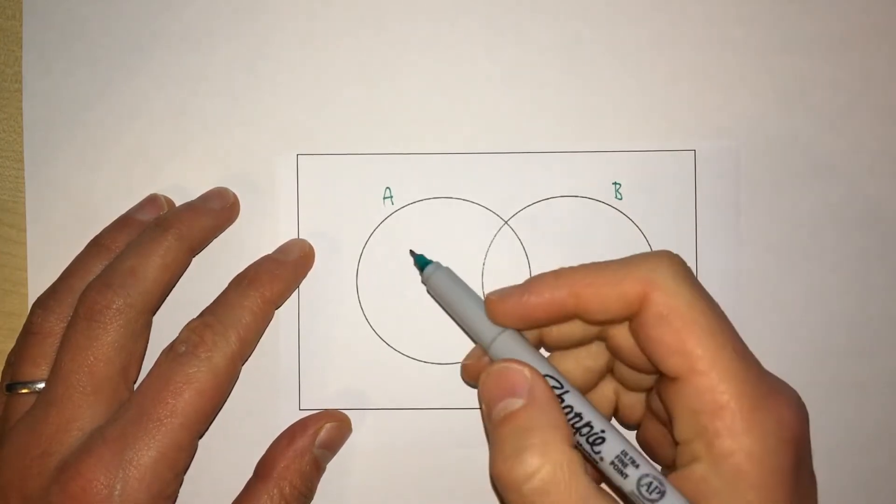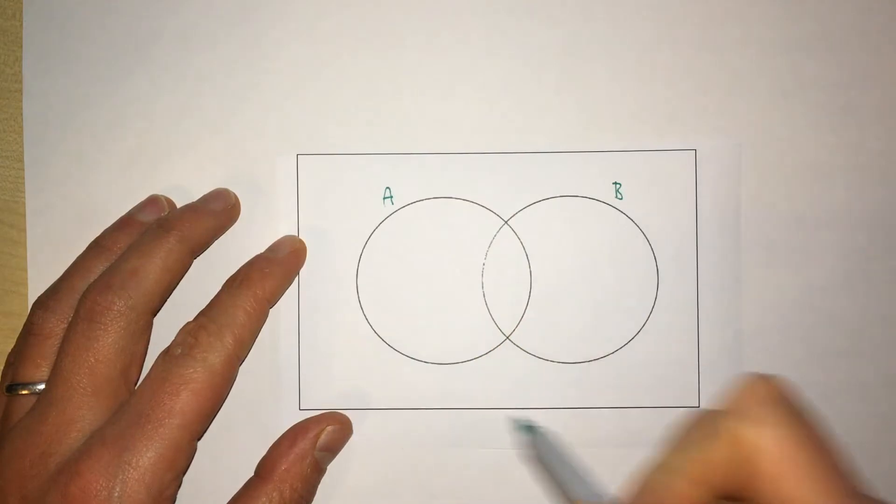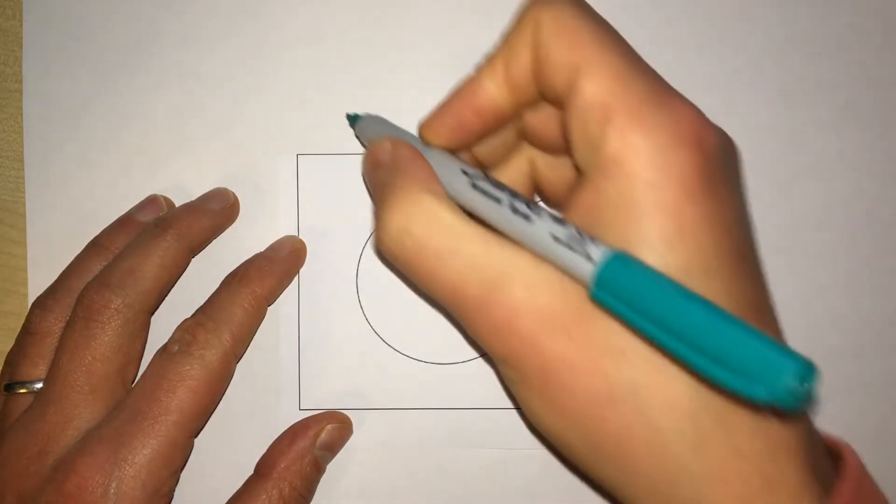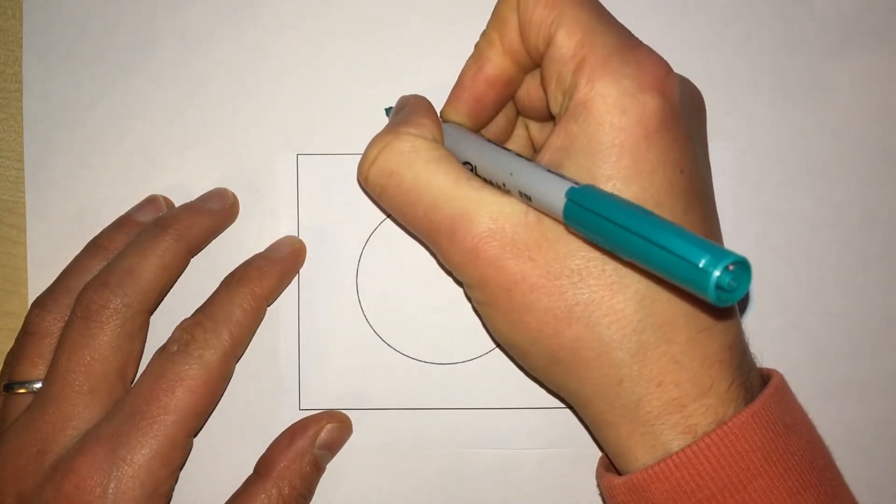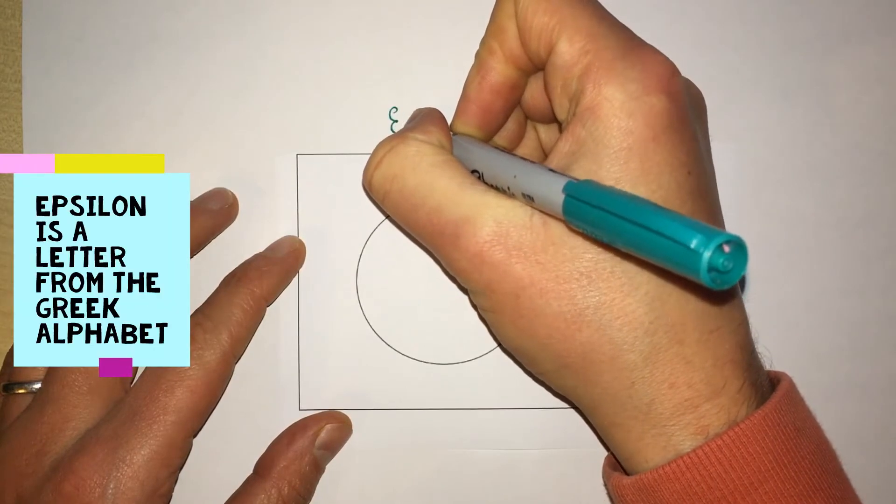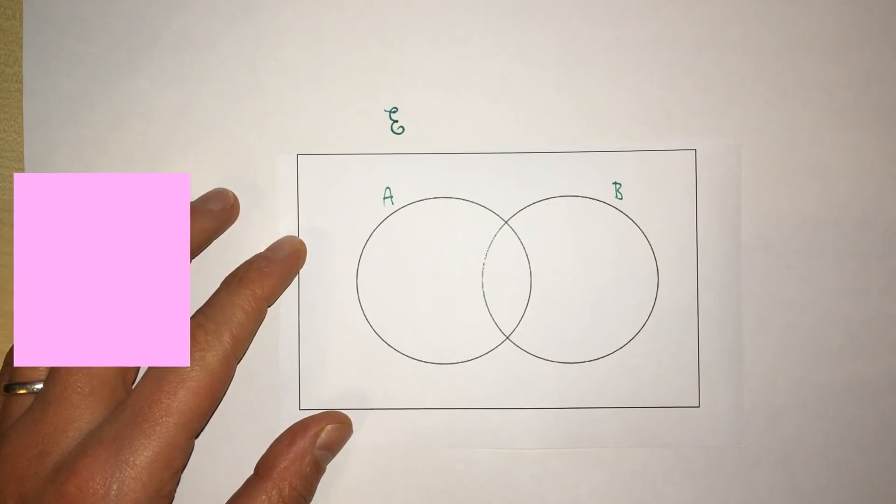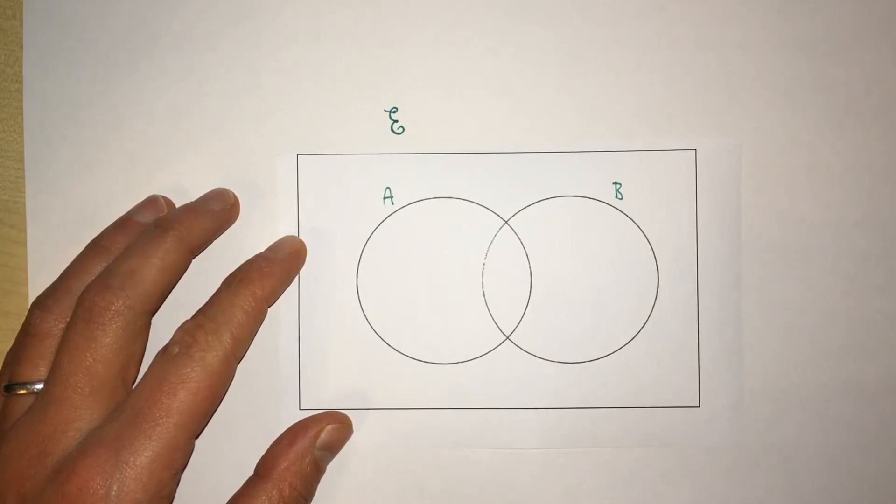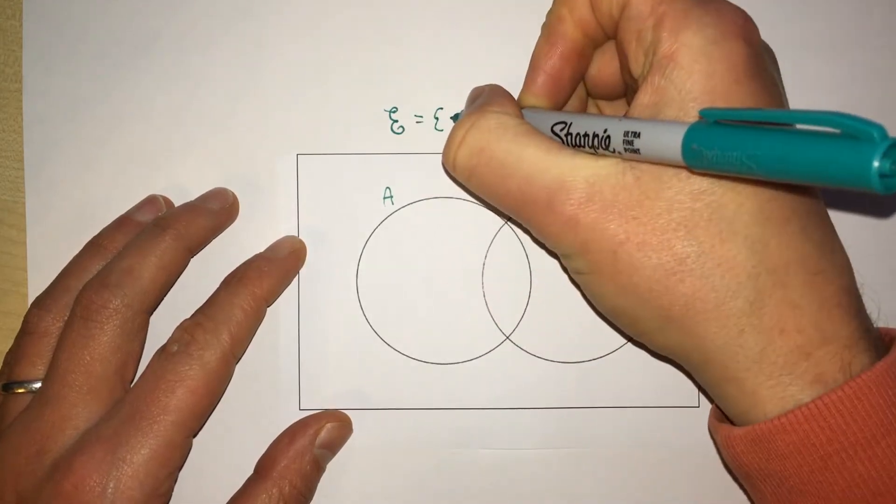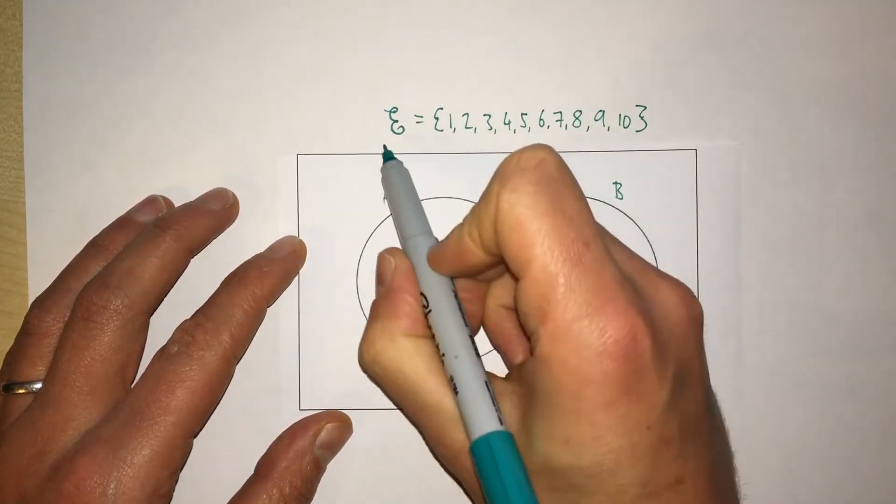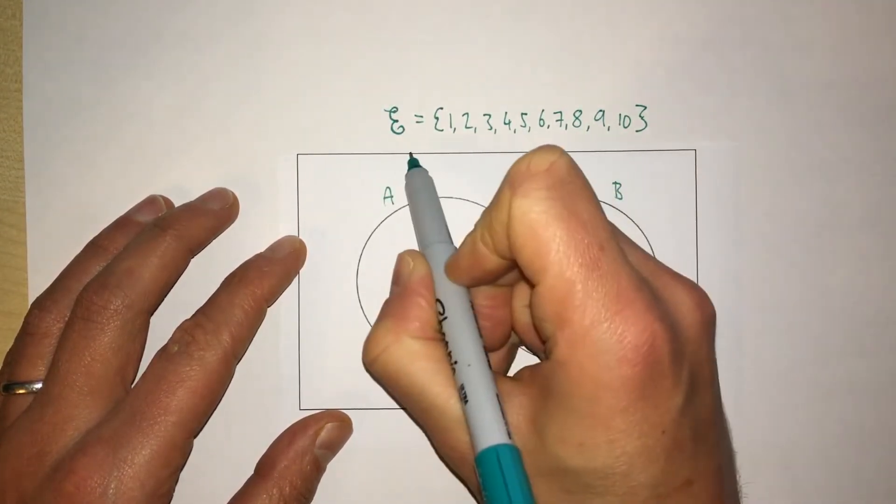The universal set is represented by the rectangle, and we use the letter epsilon to represent the universal set. Let's say that our universal set are the numbers from 1 to 10. Here we have our universal set.